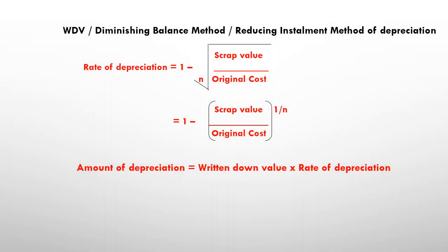We have already seen in the earlier video that the rate of depreciation is found using the formula: 1 minus the nth root of scrap value divided by original cost — that is, 1 minus (scrap value divided by original cost) to the power of 1/n. The amount of depreciation is found by multiplying the written down value and the rate of depreciation.